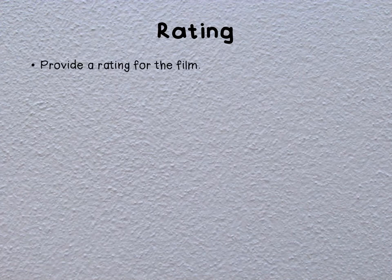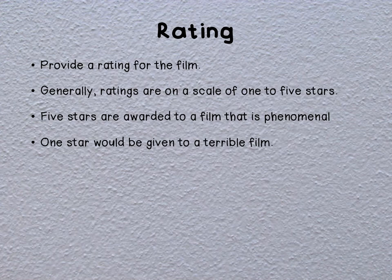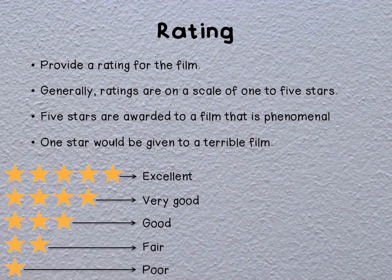The last aspect of a film review that you would need to include is a rating. Generally film ratings are on a scale of one to five stars. This is a rating of the film as a whole with all the aspects mentioned above considered. Five stars are awarded to a film that a reviewer considered phenomenal, and one star would be given to a film a reviewer considered terrible. Here is a rating scale you can use: five stars for excellent, four stars for very good, three stars for good, two stars for fair, or one star for poor.